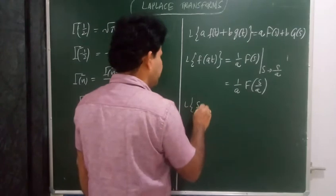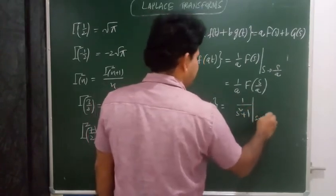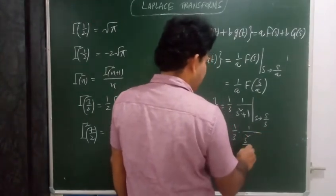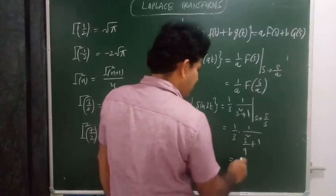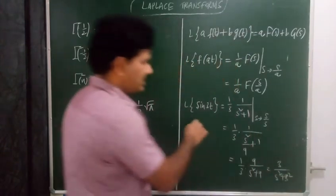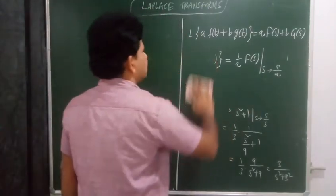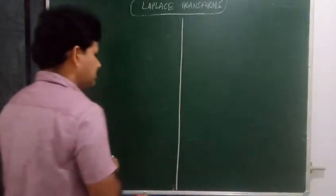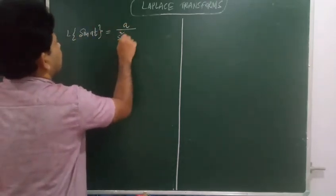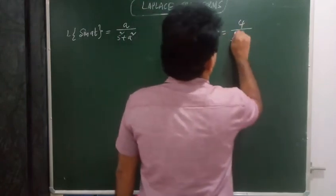Laplace transform of elementary functions: L{sin(at)} equals a over s squared plus a squared. For example, L{sin(4t)} is 4 upon s squared plus 4 squared. L{cos(at)} equals s over s squared plus a squared. For example, L{cos(2t)} is s over s squared plus 2 squared.